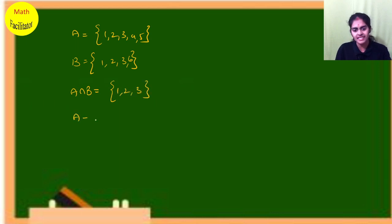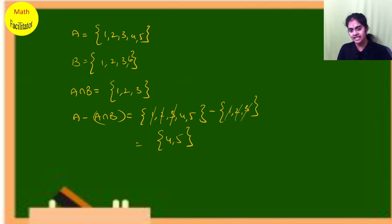If I want to find A minus A intersection B, A is {1, 2, 3, 4, 5} minus A intersection B which is {1, 2, 3}. I remove the common elements between A and A intersection B, and write the remaining elements, which gives {4, 5}.